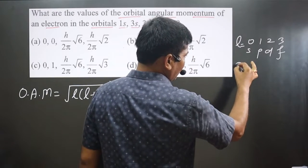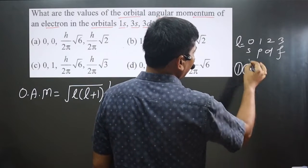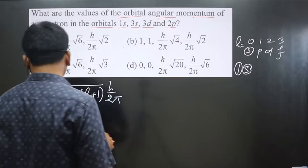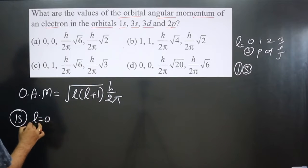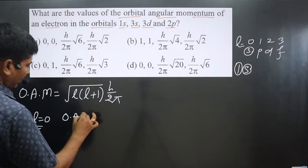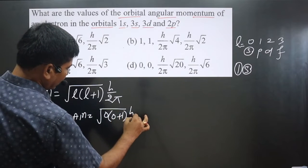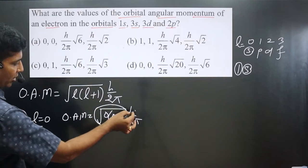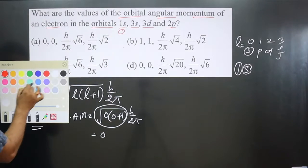First orbital: 1s. Here '1' represents the principal quantum number n, and since it is an s orbital, l = 0. Plugging into the formula: √(0 × (0+1)) × h/2π = 0. So the orbital angular momentum for 1s is 0.